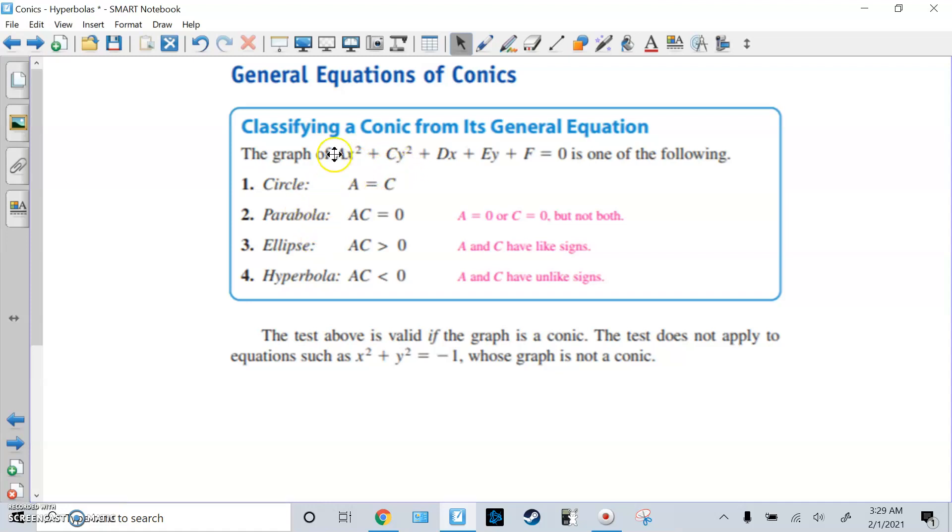For an ellipse, A times C must be bigger than 0. They have to have like signs, because it's both x squared and y squared. It's kind of related to a circle, but the numbers in front are different. For a hyperbola, A times C will be less than 0. They have to be unlike signs. One's going to be negative because you subtract them. For an ellipse, you're going to be adding the two fractions. And the test above is valid if the graph is a conic. It doesn't apply to things like x squared plus y squared equals negative 1, because you can't have a radius of negative 1.